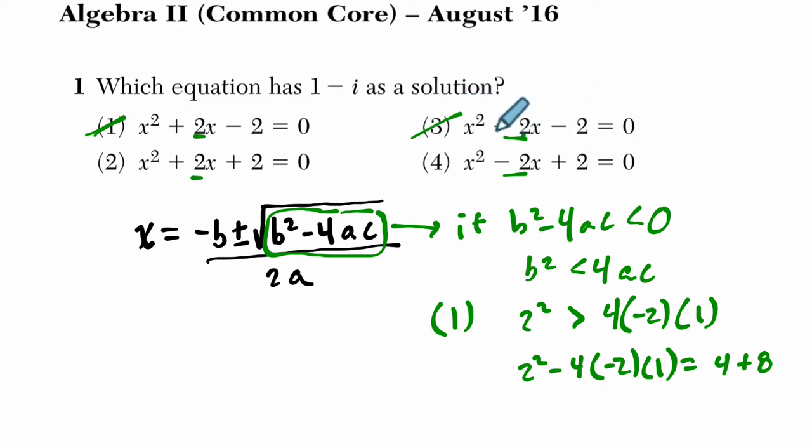And in a similar way, we can cross out this one here as well without even testing it. Because even though we're starting with negative 2, negative 2 squared is 4, c itself is negative. And if c is negative, we're going to be adding 4ac, not subtracting it. So it's going to be one of these two choices.